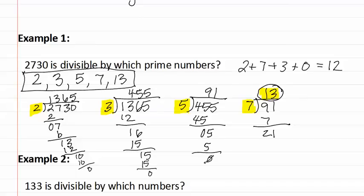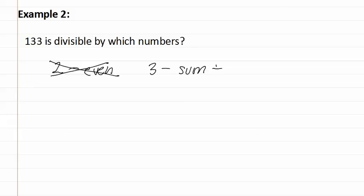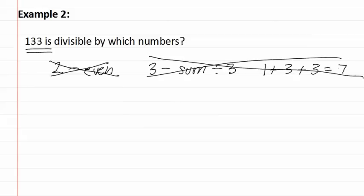Let's look at example two. Example two asks: 133 is divisible by which numbers? Starting with our three divisibility tests — to see if it is divisible by two, the last digit needs to be even. The last digit is three, which is not even, so it is not divisible by two. To check divisibility by three, the sum of 133 is one plus three plus three, which is seven. Seven does not evenly divide by three, so three does not go into 133. For five, the last digit needs to be a five or zero; the last digit is three, so five is not one of the numbers.